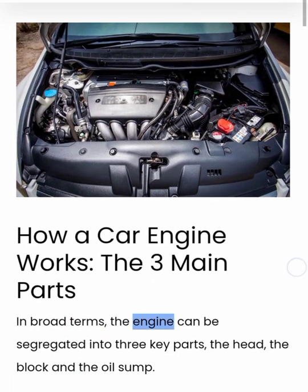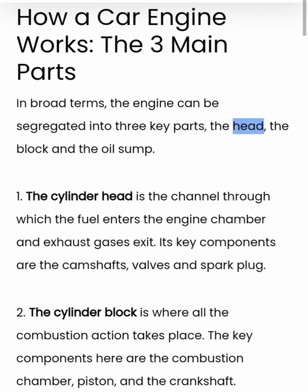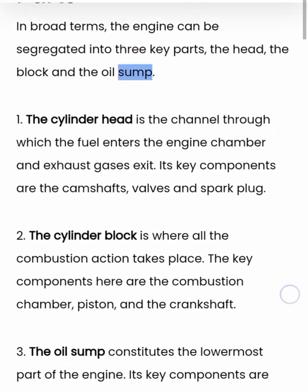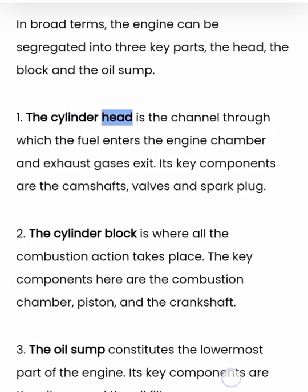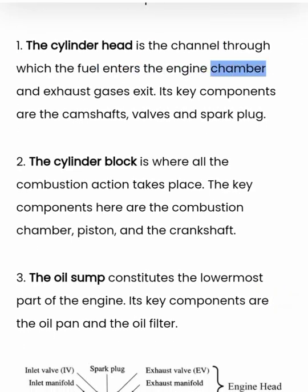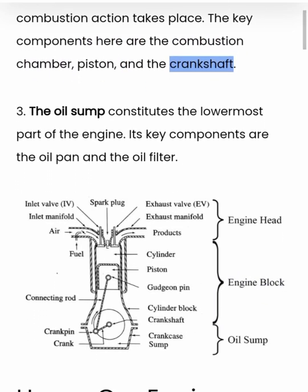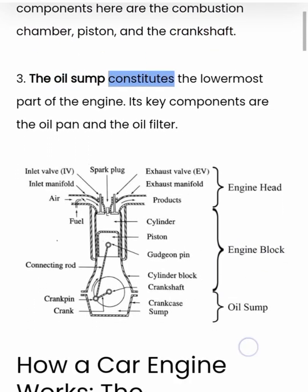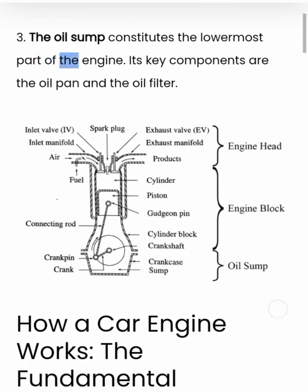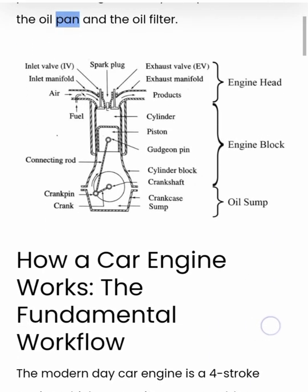In broad terms, the engine can be segregated into three key parts: the head, the block, and the oil sump. The cylinder head is the channel through which the fuel enters the engine chamber and exhaust gases exit. Its key components are the camshafts, valves, and spark plug. The cylinder block is where all the combustion action takes place. The key components here are the combustion chamber, piston, and the crankshaft. The oil sump constitutes the lowermost part of the engine. Its key components are the oil pan and the oil filter.